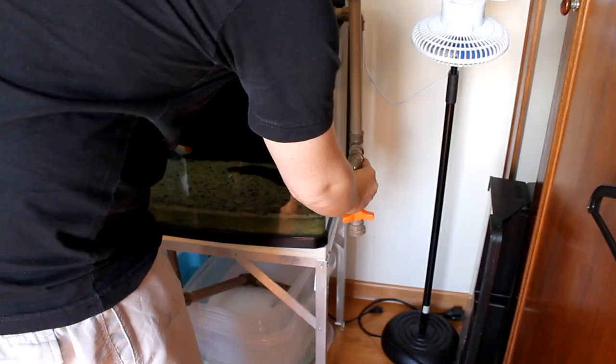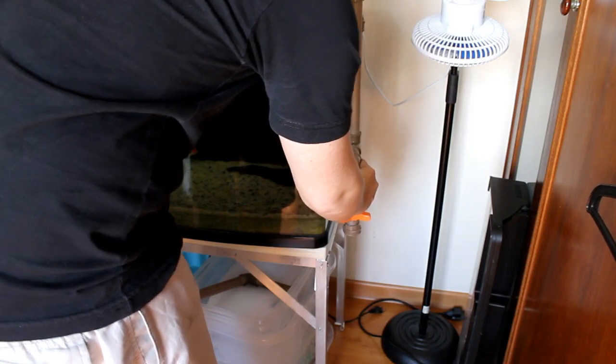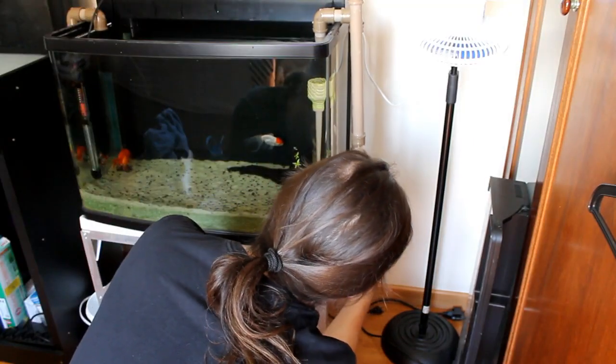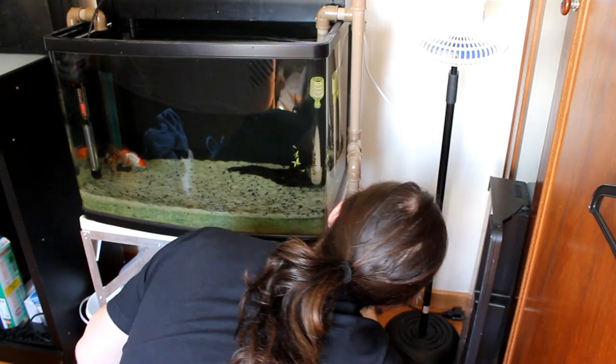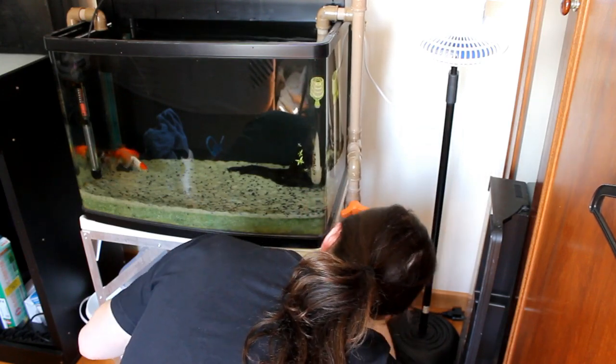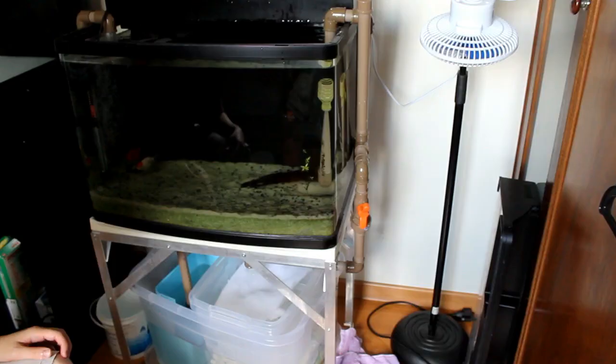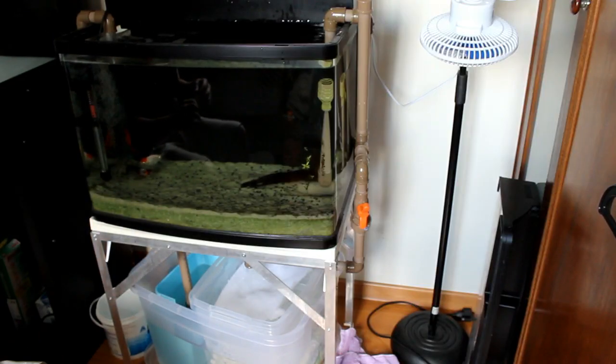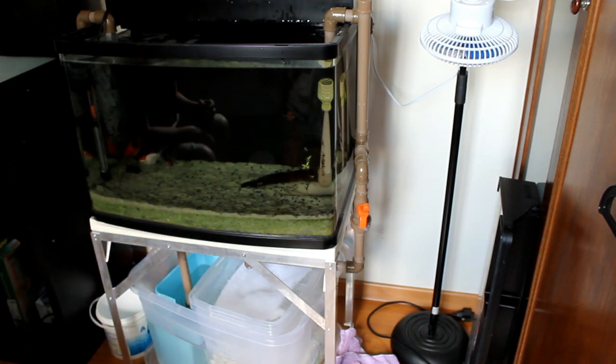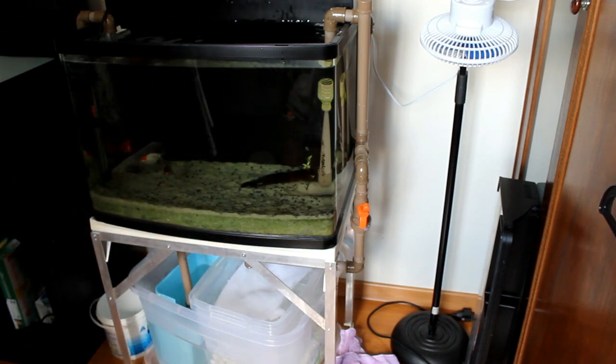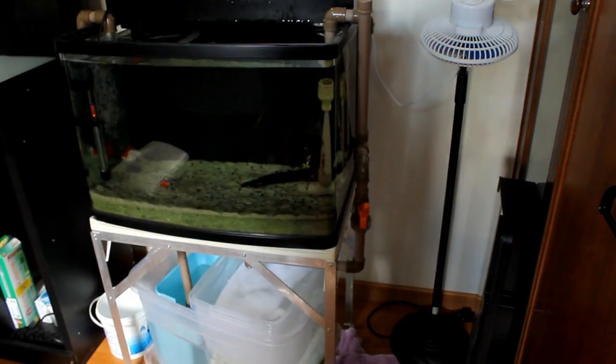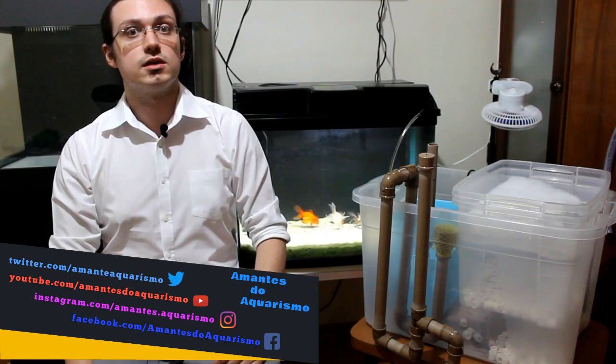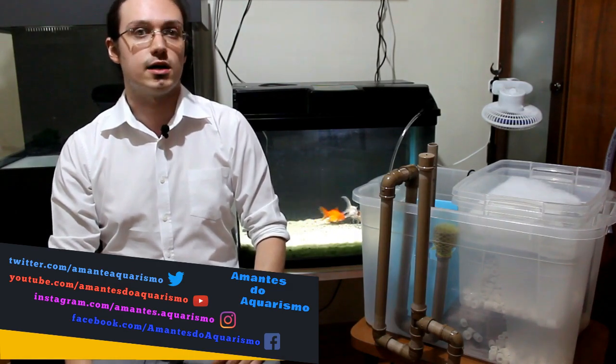Coloque o overflow novamente na posição que ficará em seu aquário, conecte os canos que foram cortados no overflow e quando estiver tudo montado e bem encaixado, podem abrir o registro levemente e ver a água do aquário sendo sugada pelo sistema até o sump. O registro não deve ser aberto por completo para que o sistema não fique barulhento, pessoal. Após isso, vocês podem ligar a bomba de recalque e ir ajustando o registro do overflow com a vazão da bomba de recalque.